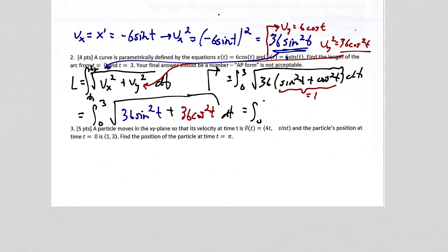So I get the integral from 0 to 3 of the square root of 36 dt. Well, the square root of 36 is 6. So I get the integral from 0 to 3 of 6 dt, which I'm almost done.